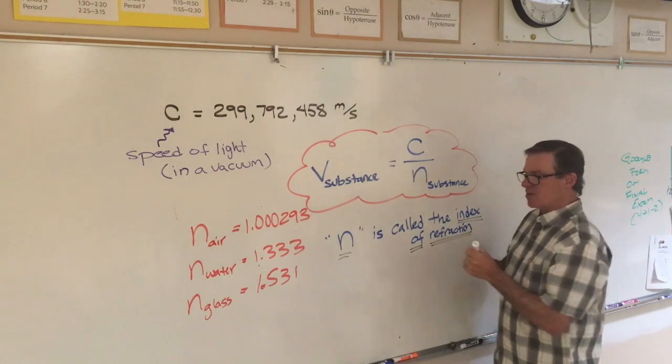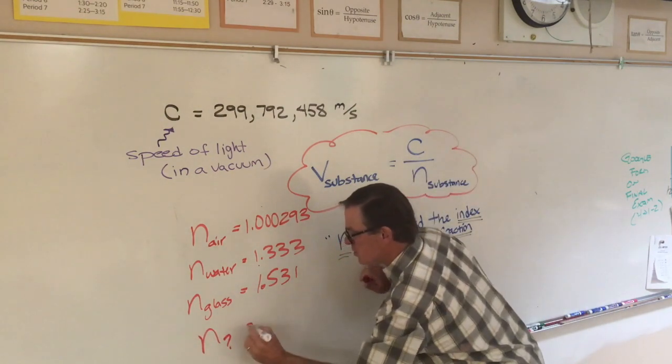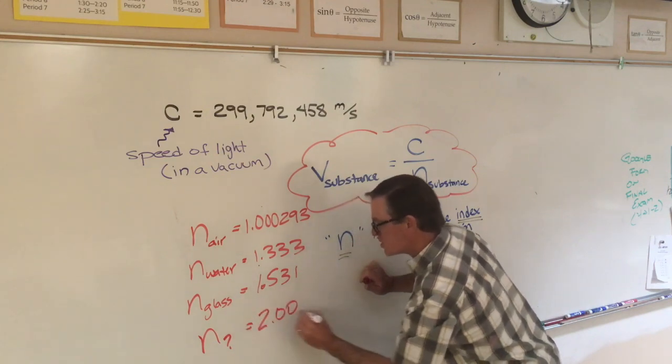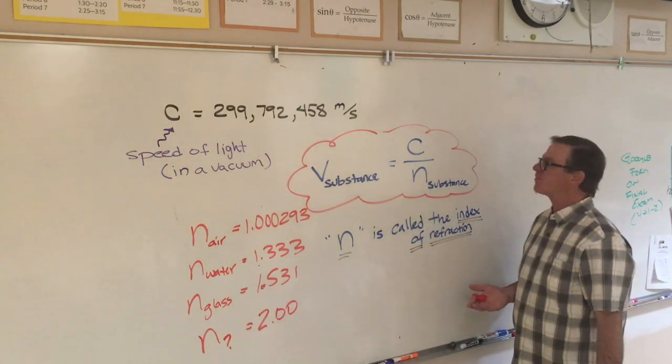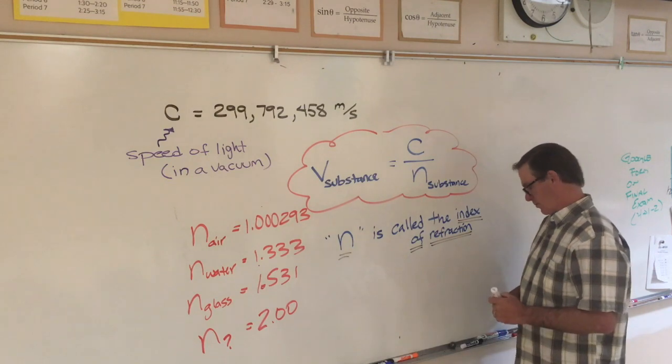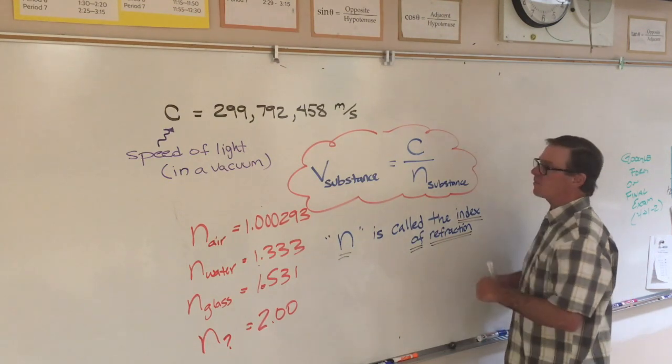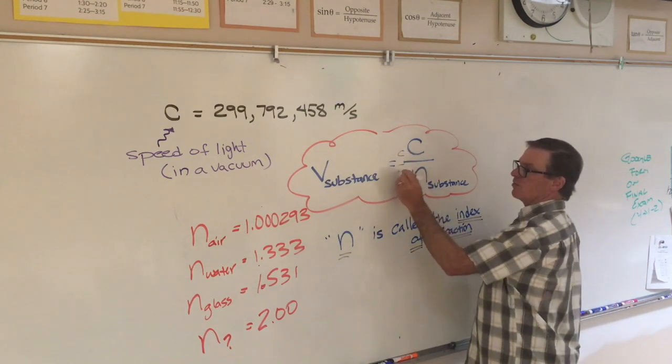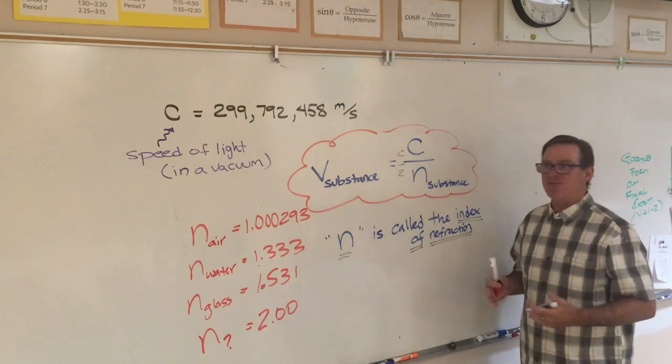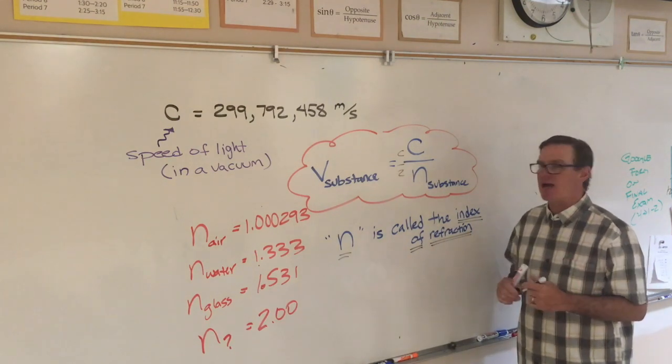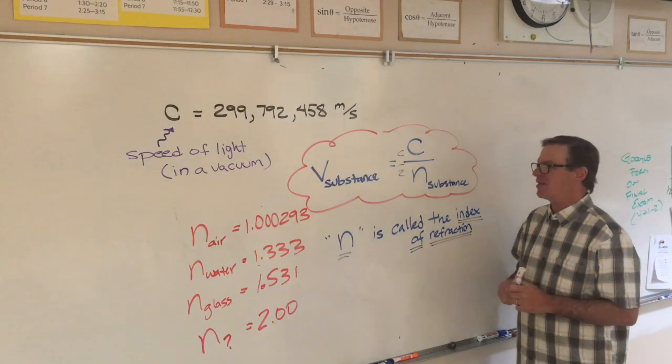If you had a material whose index of refraction were 2, then the speed of light would be what? C over 2, or one half of the speed of light in a vacuum, about 1.5 times 10 to the 8th.